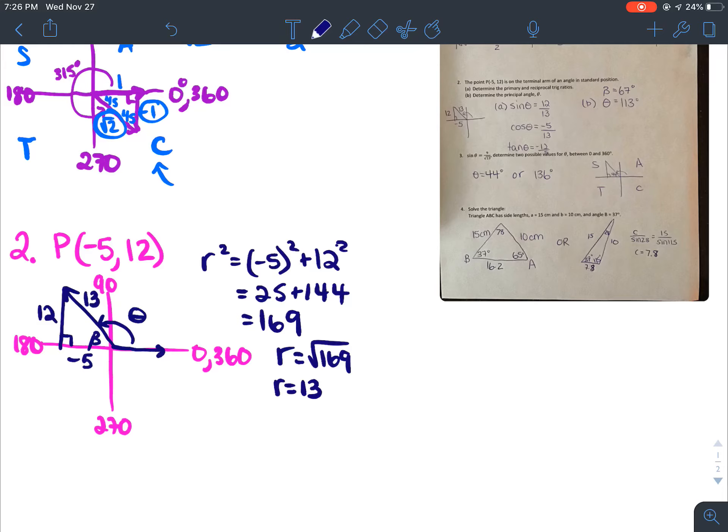So it asks us to write our primary and reciprocal trig ratios. So our primary trig ratios are sin theta equals y over R, so 12 over 13. Cos theta equals x over R, so negative 5 over 13. And tan theta equals y over x, which is 12 over negative 5.